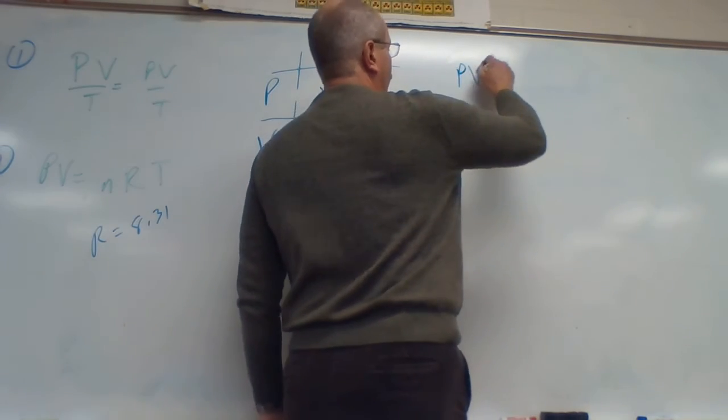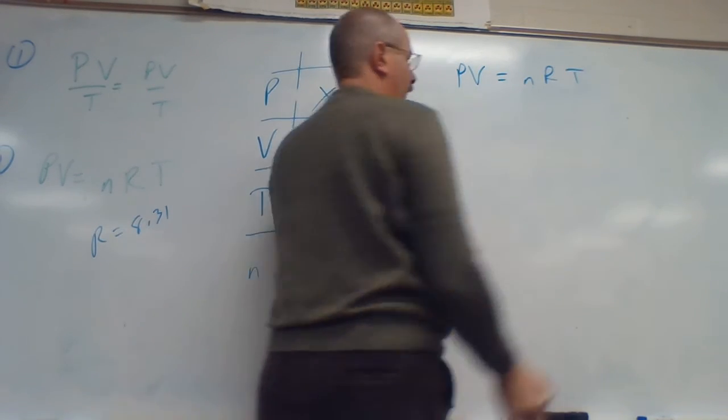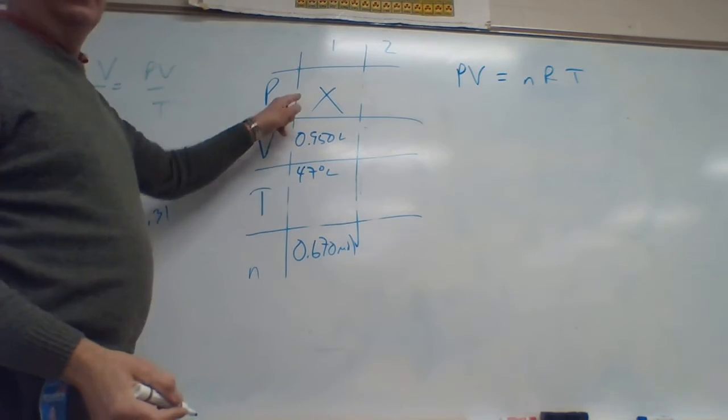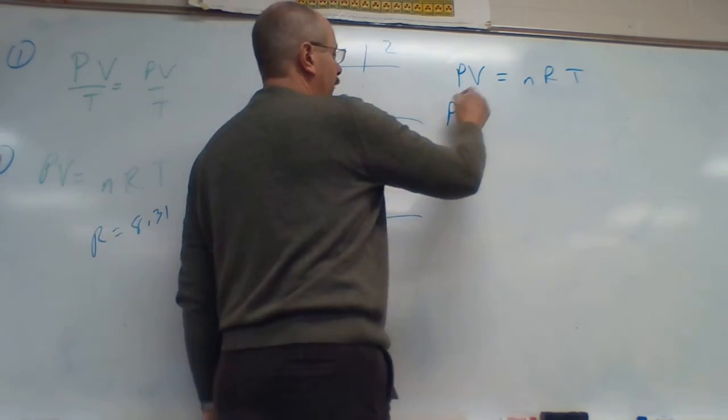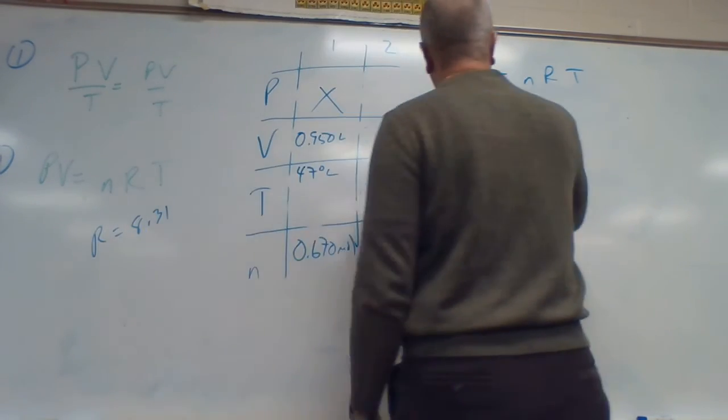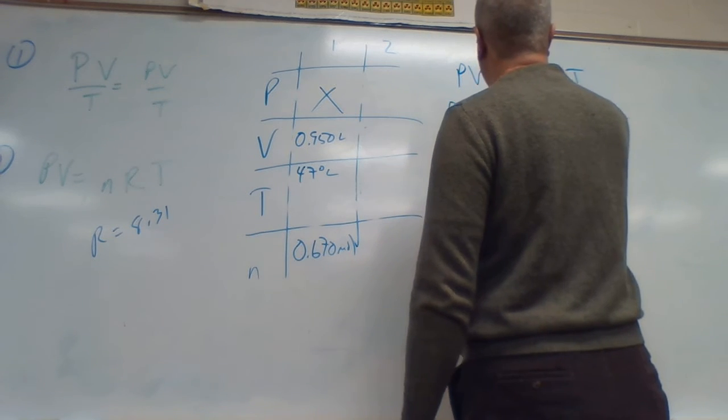Because it's only got one P, one V, and one T. So, my pressure—that's what we want to know. That's P. My volume is 0.950.